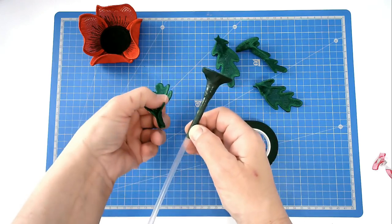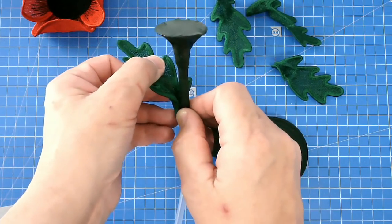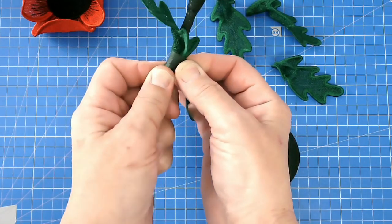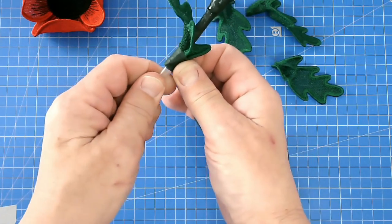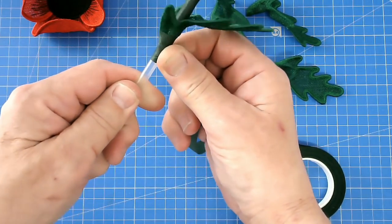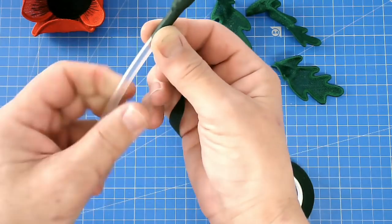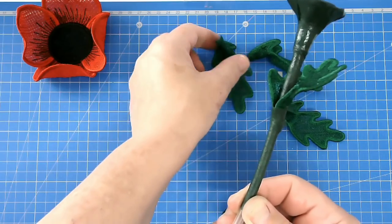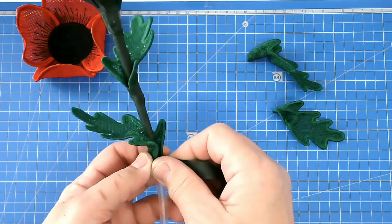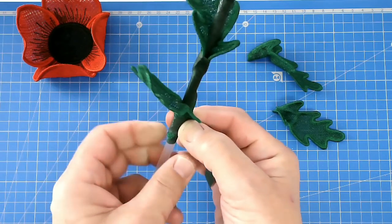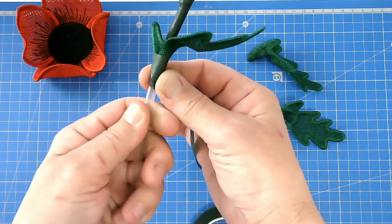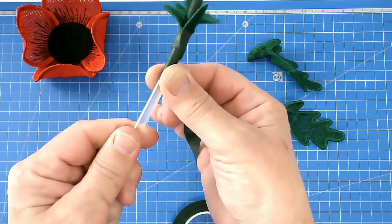And then when you come to where you want to put one of your leaves, just slip it over and then wind around the base of the leaf. Go around a few times and then work your way down again. And when you come to where you want to put your next one, slip that on and then wind around the base with your florist tape again. Go around a couple of times so that it holds it nice and securely.